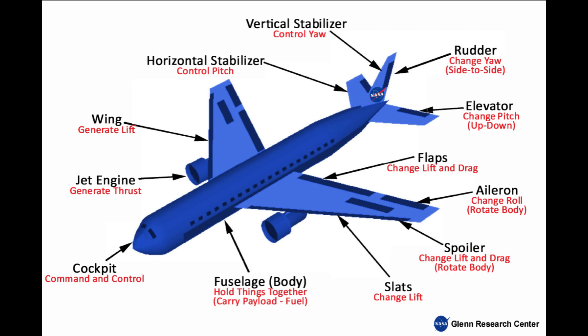Control surfaces: ailerons on the wings roll the plane left or right; elevators on the tail tilt the nose up or down; the rudder on the tail turns the nose left or right. Flaps and spoilers help slow down or increase lift during takeoff and landing.